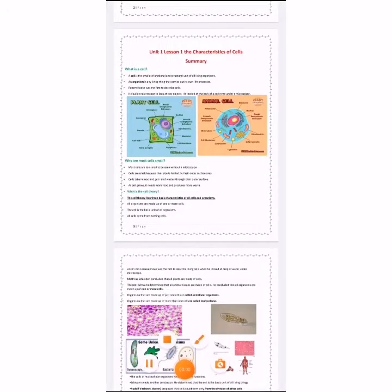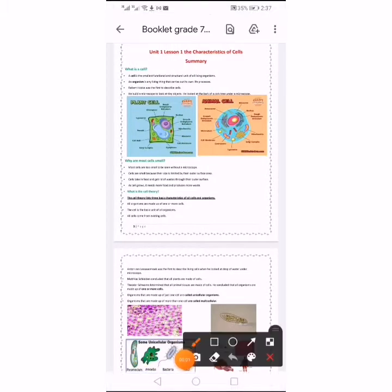I hope you are great. Today we are going to take unit 1, lesson 1: the characteristics of cells. First, we should know the meaning of cell. What is a cell? Cell is the smallest functional and structural unit of all living organisms.